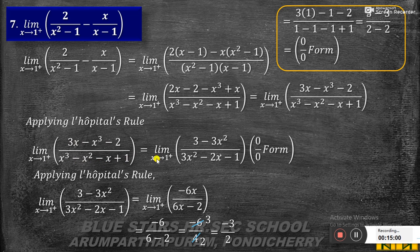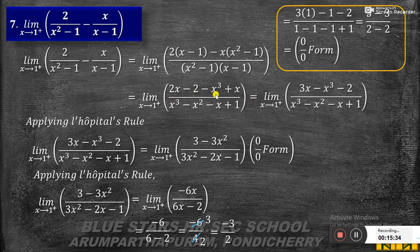So we have limit x tends to 1+ of (3x minus x³ minus 2) by (x³ minus x² minus x plus 1). Substituting x equal to 1: numerator = 3(1) minus 1 minus 2 = 0; denominator = 1 minus 1 minus 1 plus 1 = 0. We get 0 by 0 — indeterminate form.